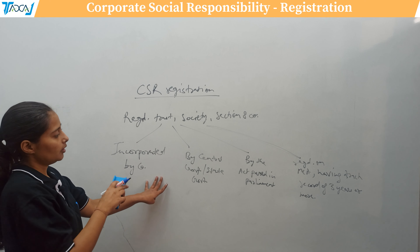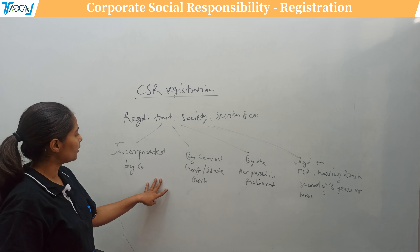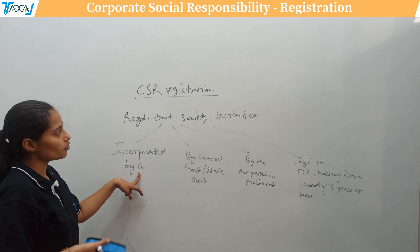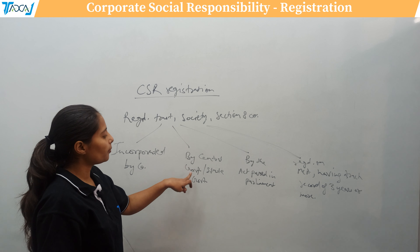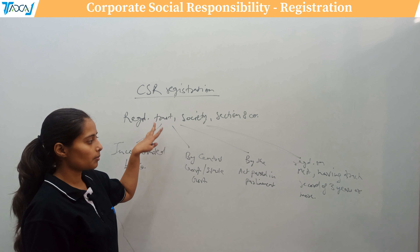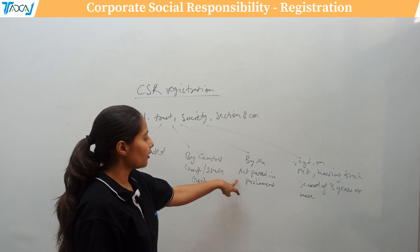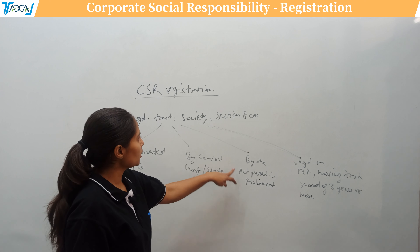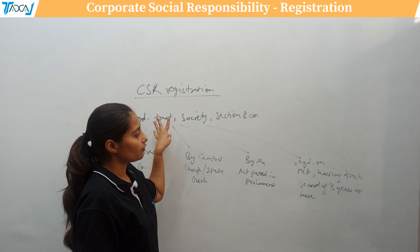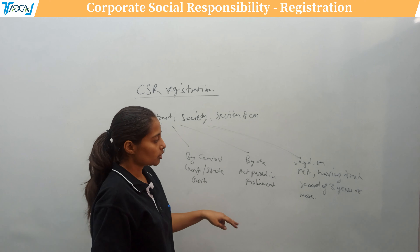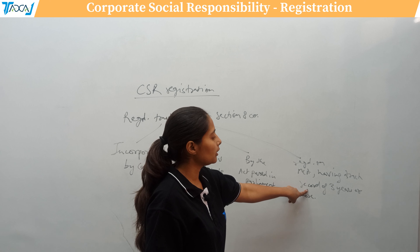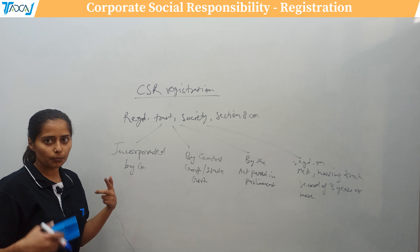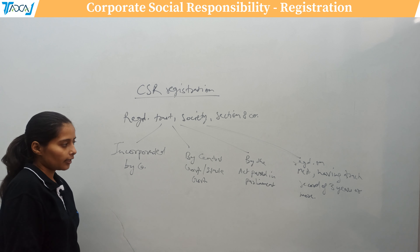So through these four types of establishments, you can undertake CSR activities — either a registered trust, society, or Section 8 company that the CSR-applicable company itself has incorporated; or a registered trust or society of the central or state government performing similar activities; or an establishment registered under a special act of parliament; or an independent NGO, for which it is mandatory to have a track record of at least three years of undertaking similar proposed activities.